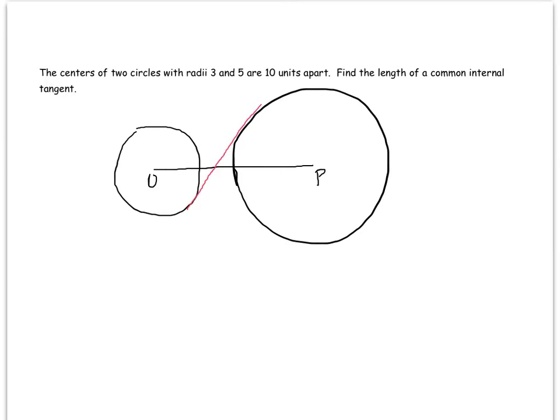If I draw a radius from center P out to the edge there, to that point of tangency, I should get a right angle, and the same thing down to that point of tangency, I also get a right angle. The radius meets a tangent at a right angle, so I know that those are right angles. So this here is 5, and this one is 3.